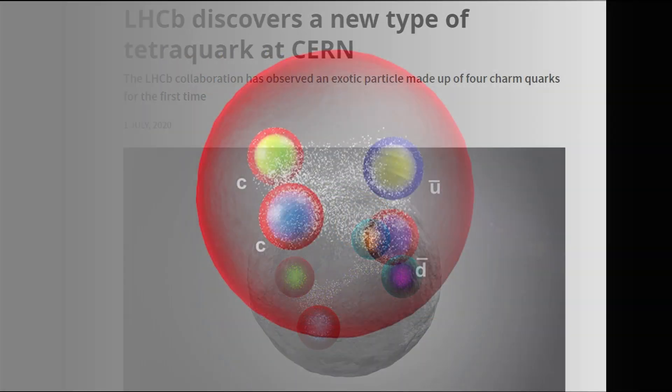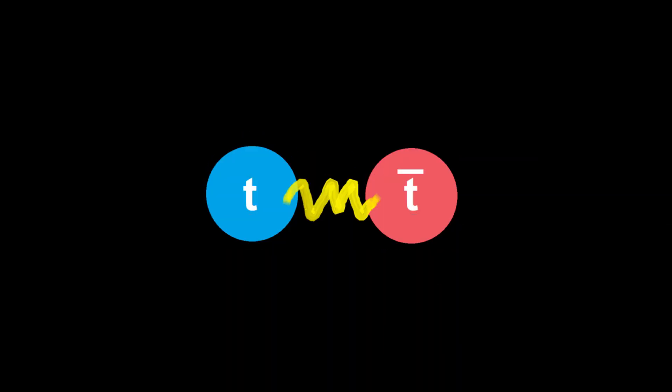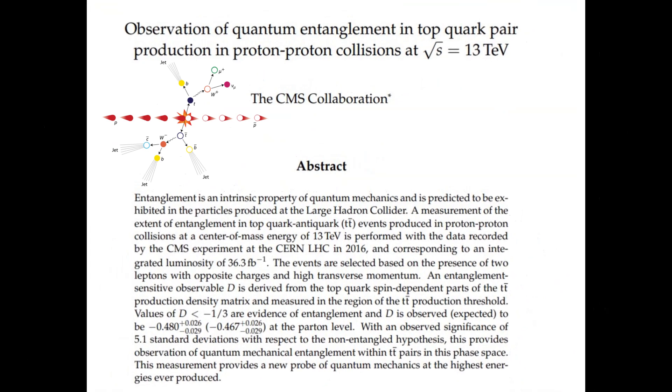Recently, we have found an evidence for the existence of a toponium bound state, which contains a top quark and an anti-top quark. This discovery was quite astonishing considering that the top quark themselves